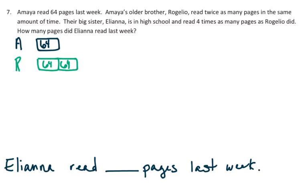So their big sister, Eliana, is in high school and reads 4 times as many pages as Rogelio did. So let's do Eliana, and she reads 4 times as many as Rogelio. So this is just a picture representing the three children and how much they read last week.